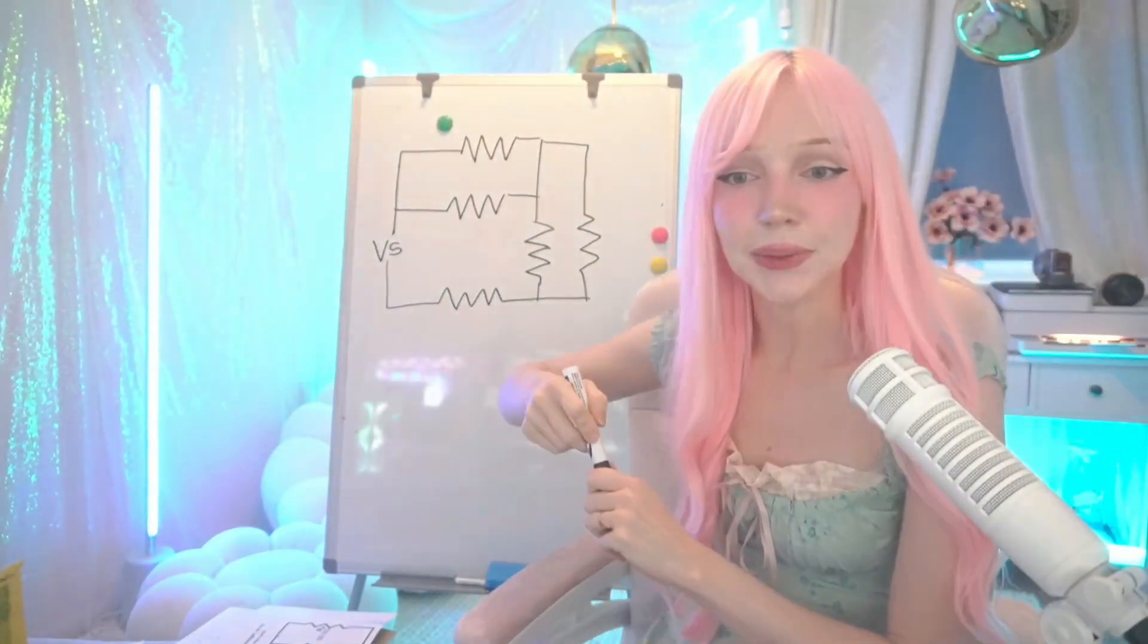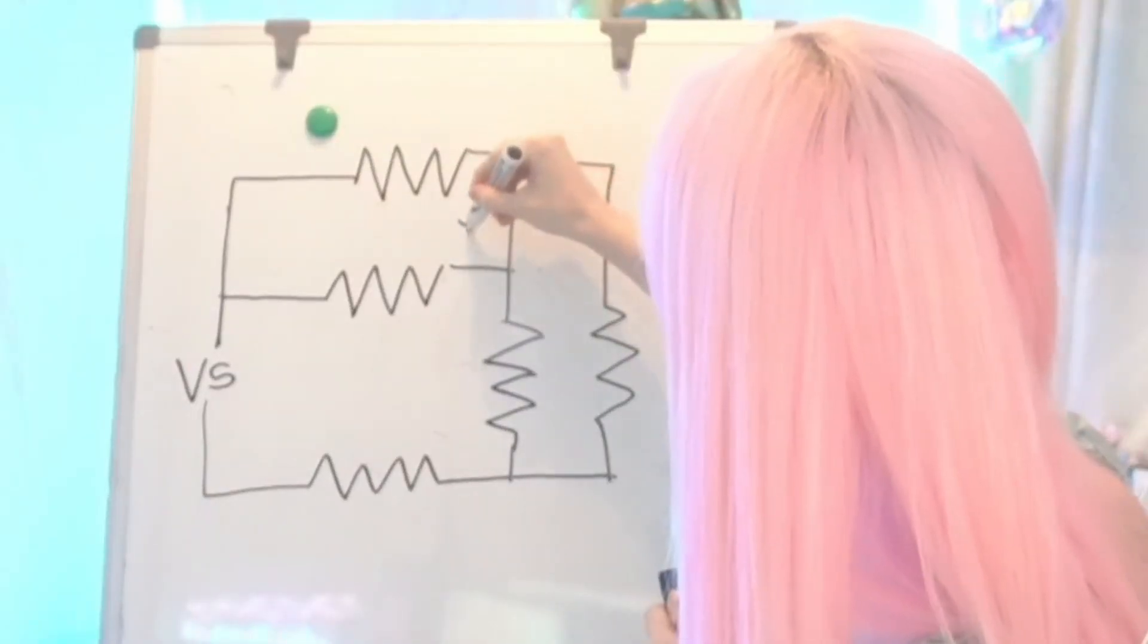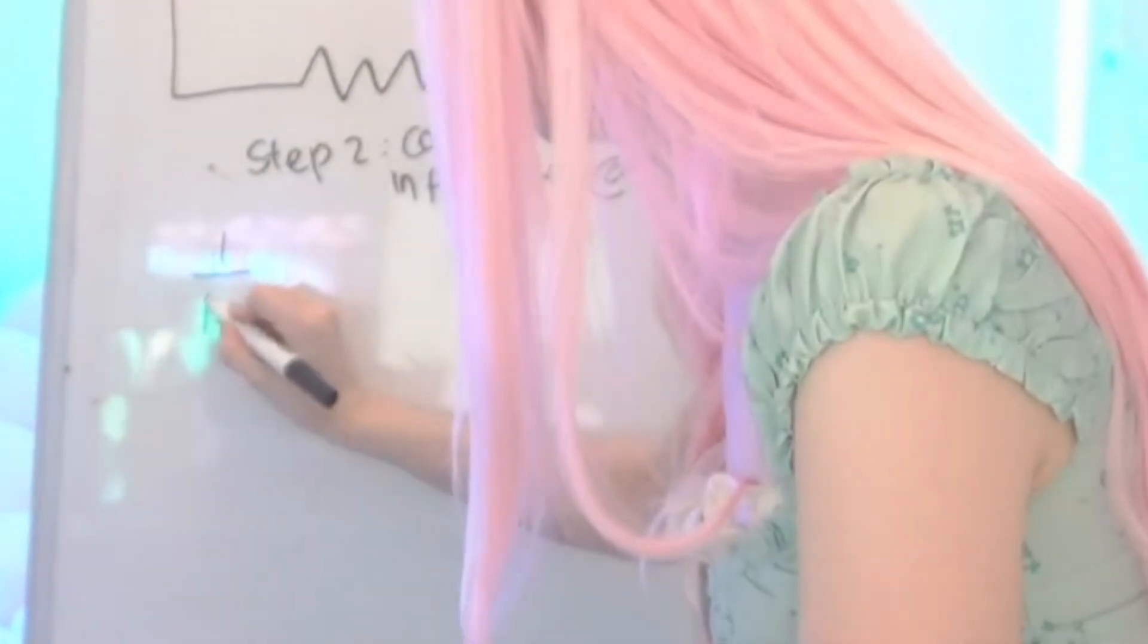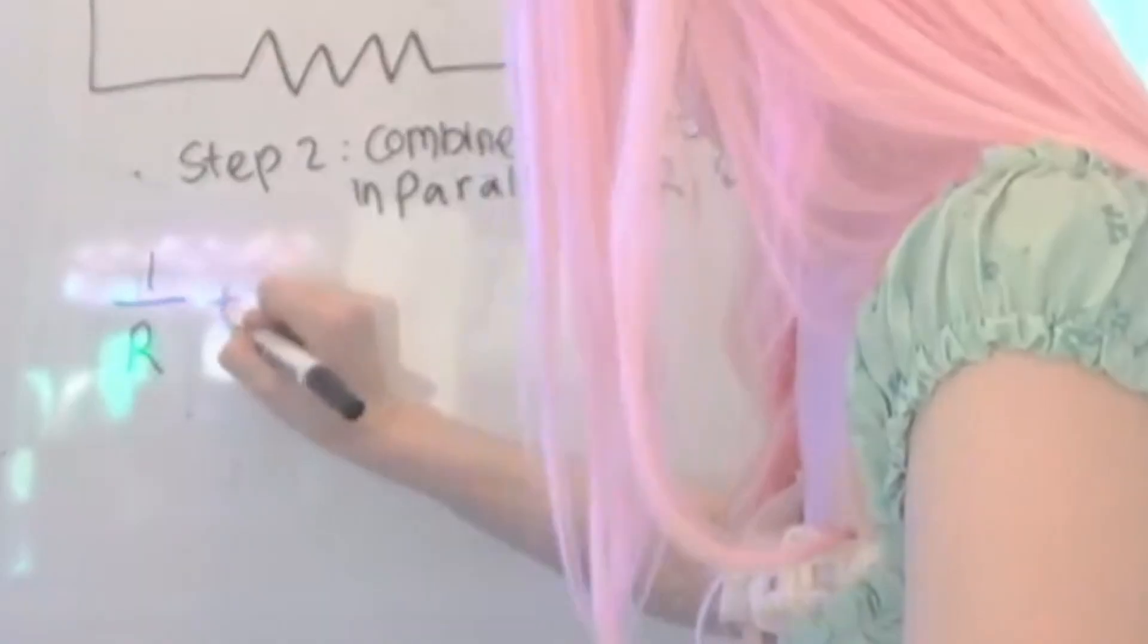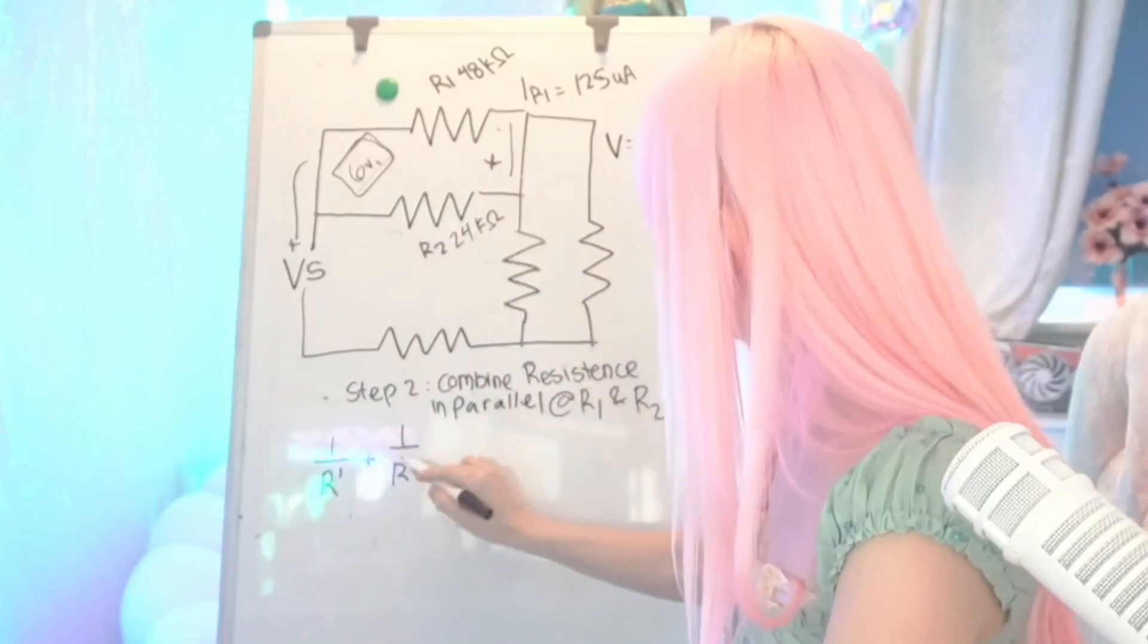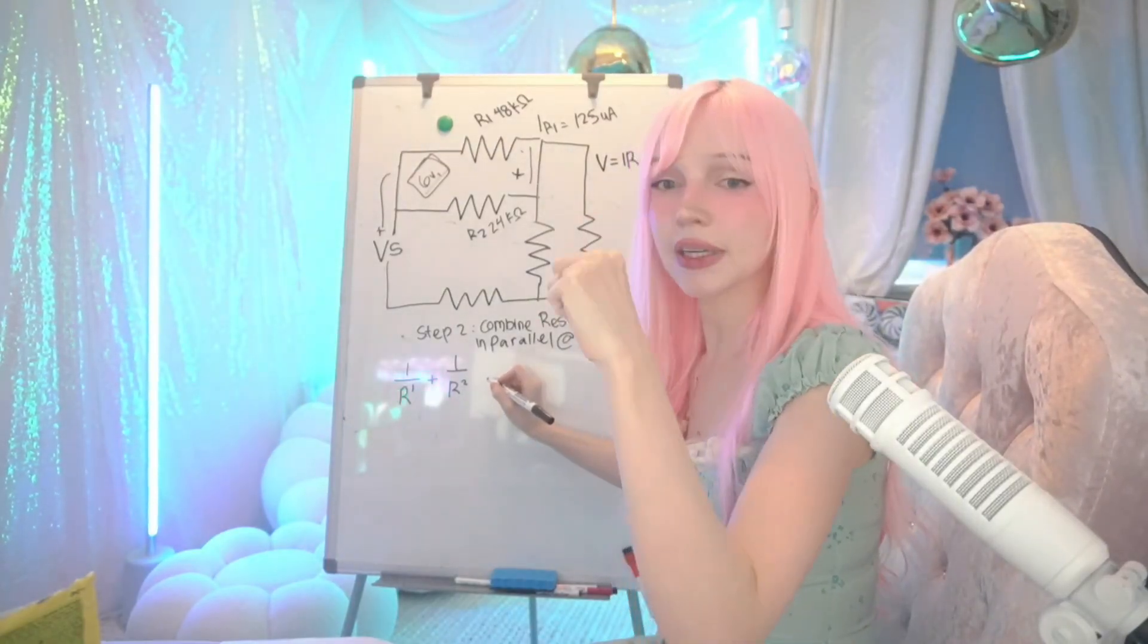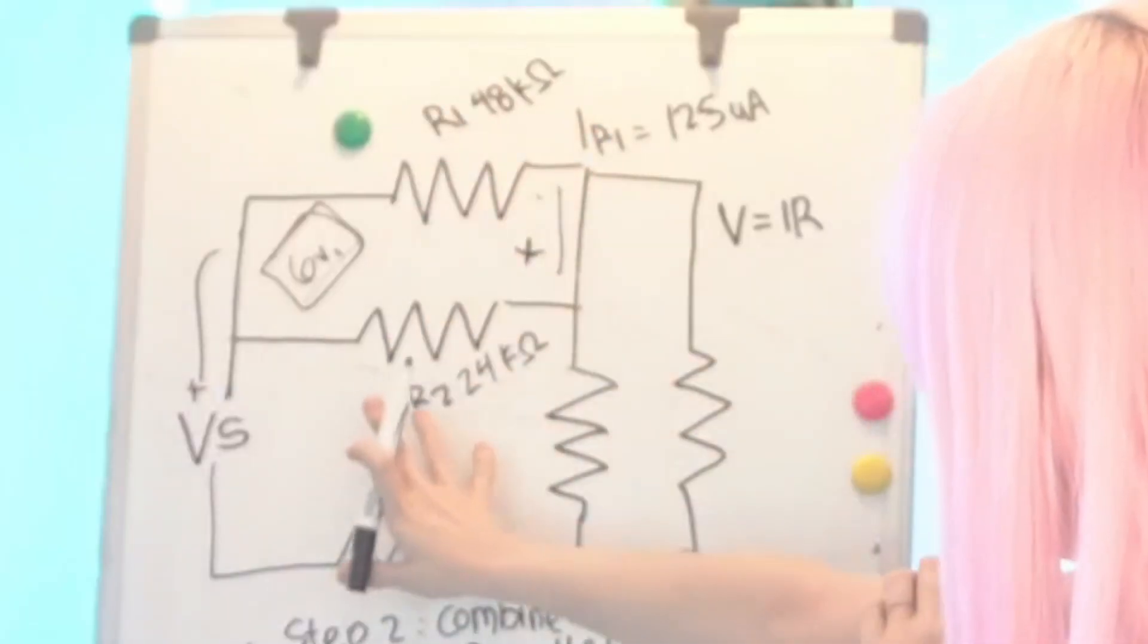The first thing you want to do is we want to combine these two parallel resistors. Basically it's 1 over resistance 1 plus 1 over resistance 2. So I'll do 1 over resistance 1, 1 over resistance 2, and then once we get the total we're going to do that again. Right here we're going to take 48,000, 24,000.